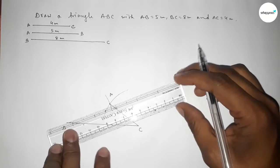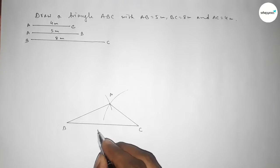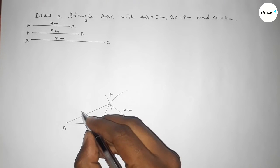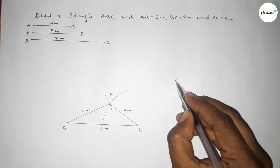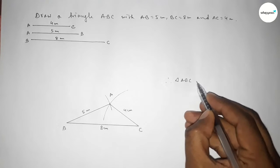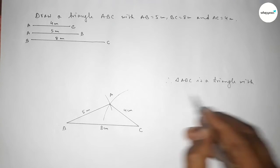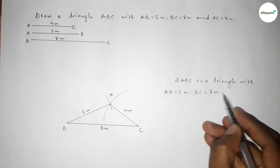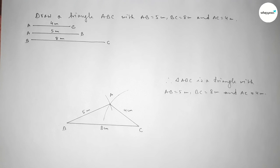Now joining A and C, then joining A and B to get triangle ABC. The side BC equals 8 centimeter, AC equals 4 centimeter, and AB equals 5 centimeter. Therefore, triangle ABC is complete with AB equal to 5 centimeter, BC equal to 8 centimeter, and AC equal to 4 centimeter. That's all — thanks for watching! If this video is helpful to you, please share it with your friends.